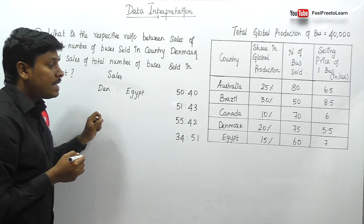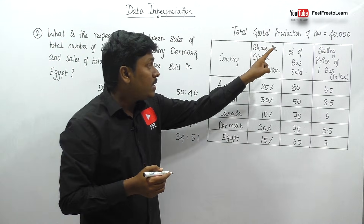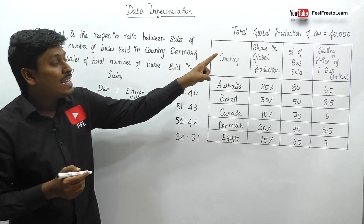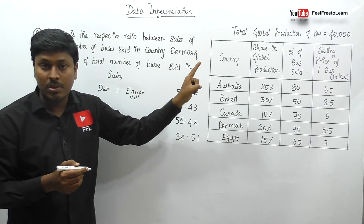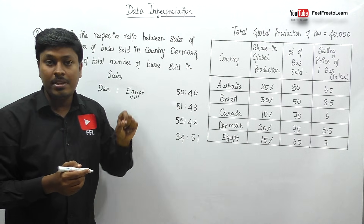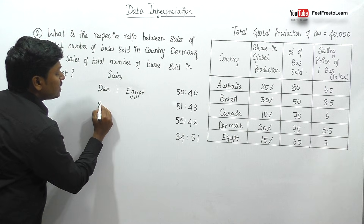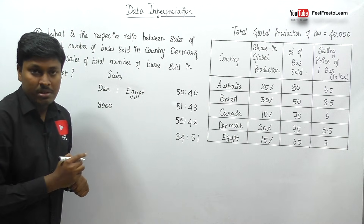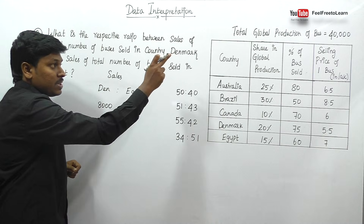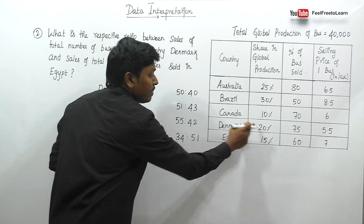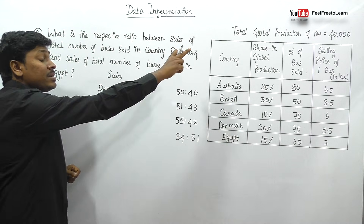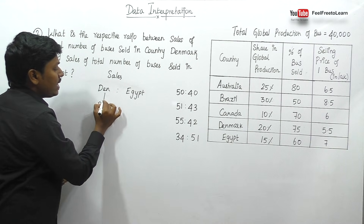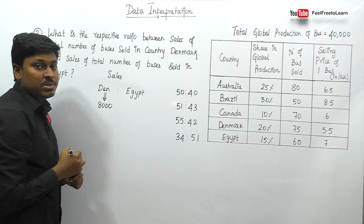Our target is to find the ratio of sales for Denmark and Egypt. Out of 40,000 buses, Denmark is getting 20%. Since 10% of 40,000 is 4,000, 20% will be 8,000. So Denmark got 8,000 buses. Out of this 8,000, Denmark sold only 75% of the buses. 75% of 8,000 will be 6,000. So only 6,000 buses are sold in Denmark.